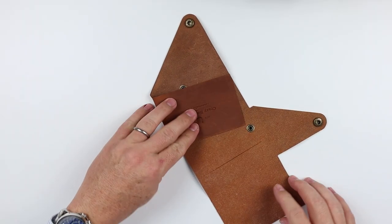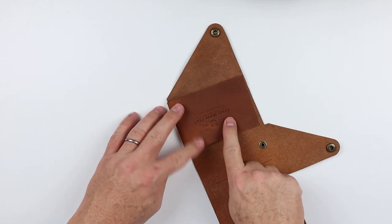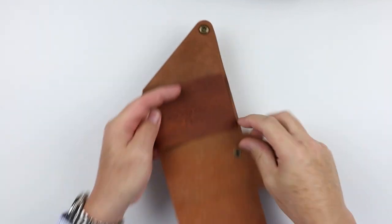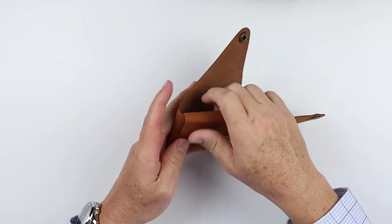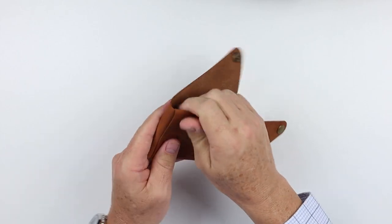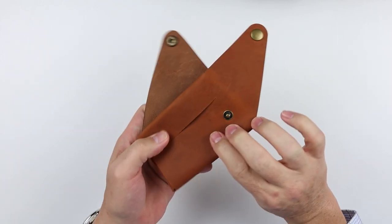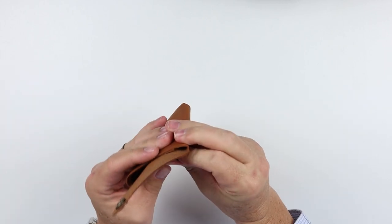This goes here. You can see the Crazy Horse Craft stamp right there. This comes up over and under. And let's see, this needs to be a little tight. This folds over and snaps here.